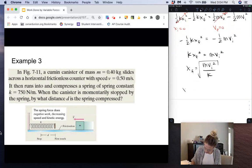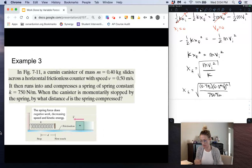Plugging in numbers here, we get x final is equal to square root of the mass of the canister, which was 0.4 kilograms, times initial velocity, which was 0.5 meters per second, and we square that, divided by the spring constant k, 750 newtons per meter, and then we'll take the whole square root of that whole thing.